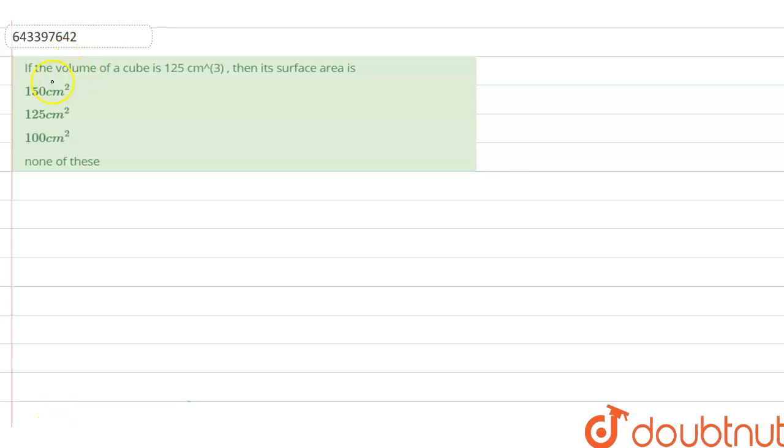Hey guys, we have a question right now. The question is: the volume of a cube is 125 centimeter cube, then its surface area is? It's an easy question. Now we will solve this.